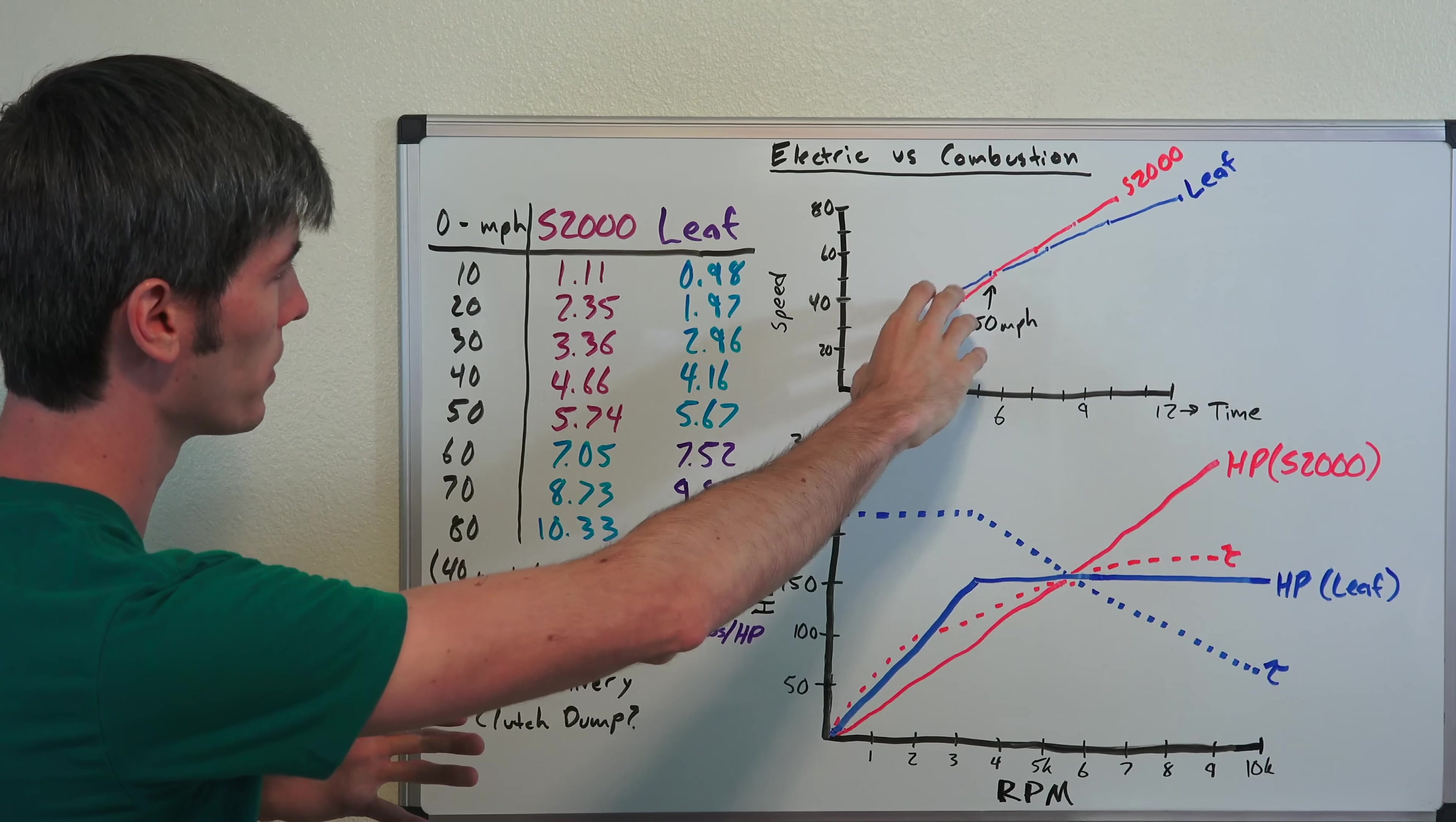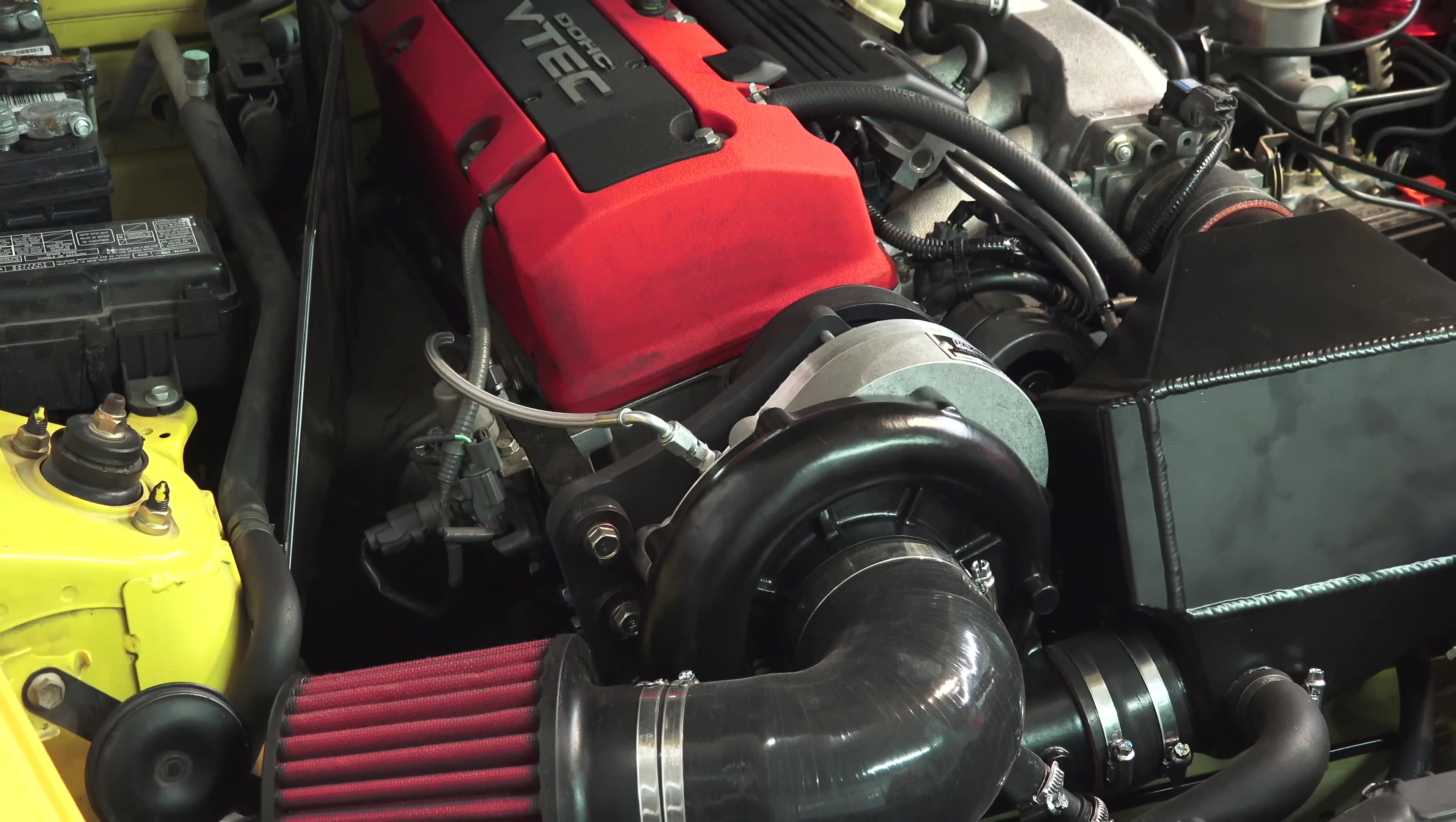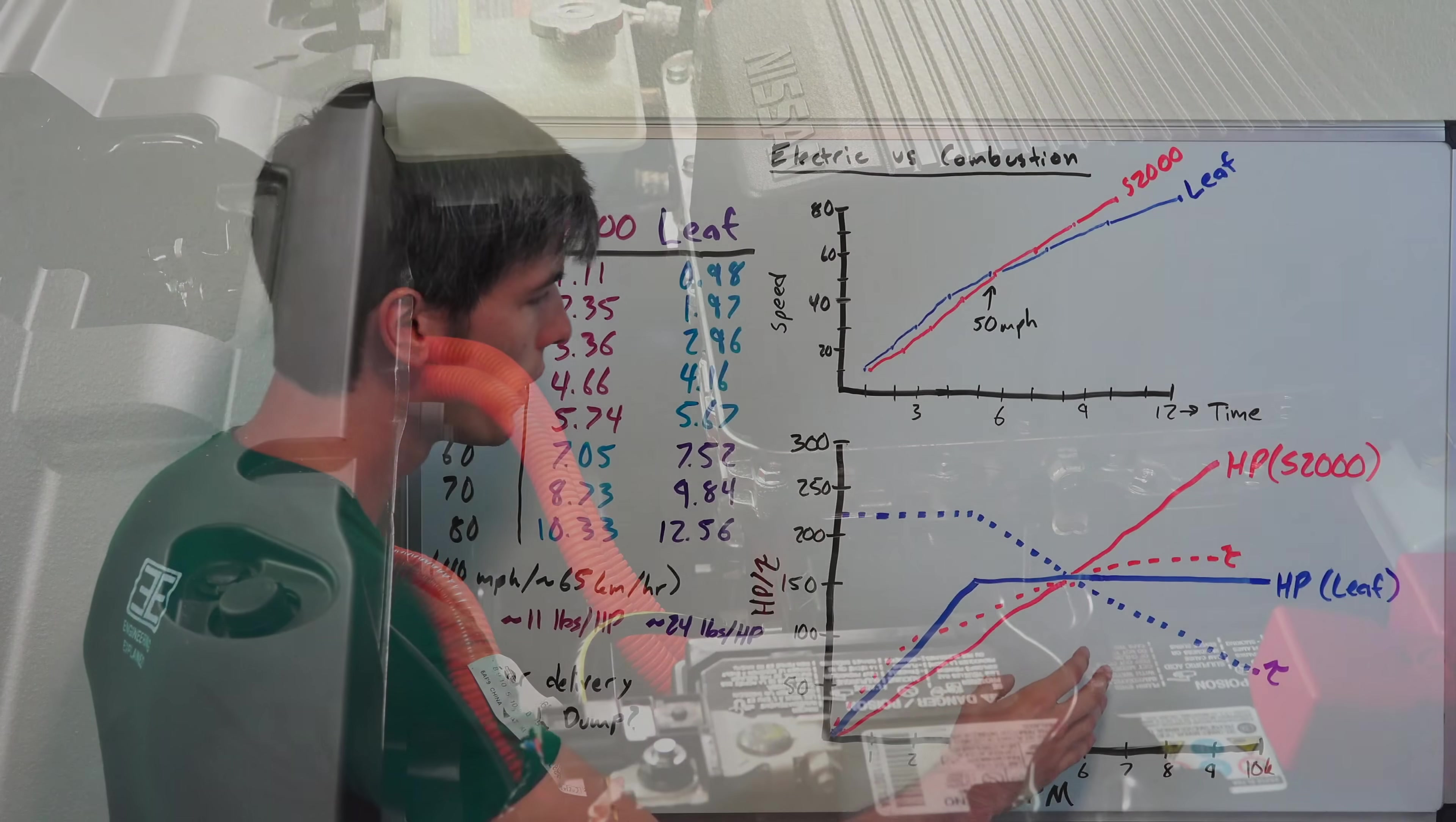So why is this? This is where we're going to get into the torque and horsepower curves for each of these two vehicles to help explain why this happens and why these two cars have such similar acceleration yet very different power-to-weight ratios.